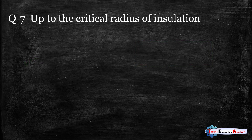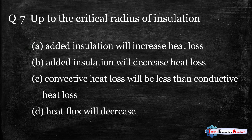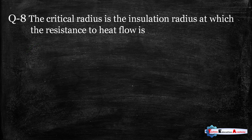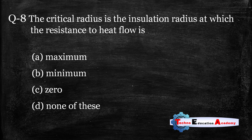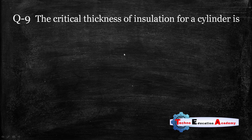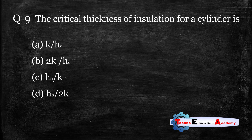Question number seven: Up to the critical radius of insulation, the added insulation will increase the heat loss. The right answer is option A. Question number eight and nine: The critical thickness of insulation for a cylinder — the critical radius is the insulation radius at which resistance to heat flow is minimum, and it equals k/h_o, where k is the thermal conductivity and h_o is the convective heat transfer coefficient on the outside.